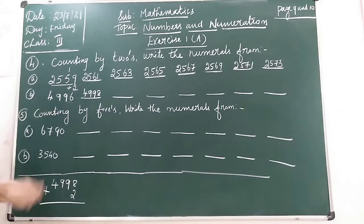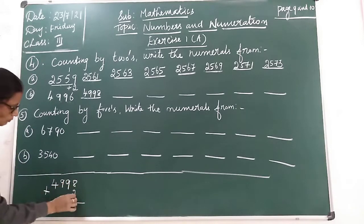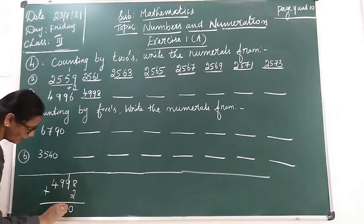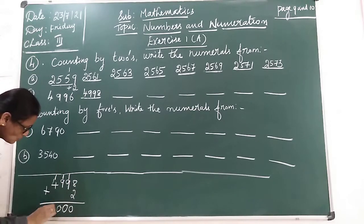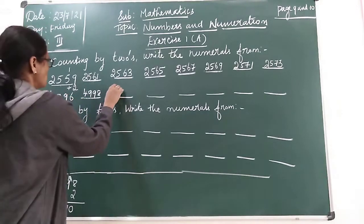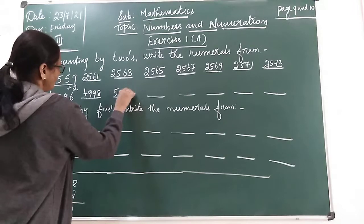4998 plus 2. 2 you have to count for children. So like this number you add 2. 8 plus 2 is 10. 1 carry over. 9 plus 1 is 10. 1 carry over. 9 plus 1 is 10. Again 1 carry over. 5,000. 4,998. Next is 5,000.